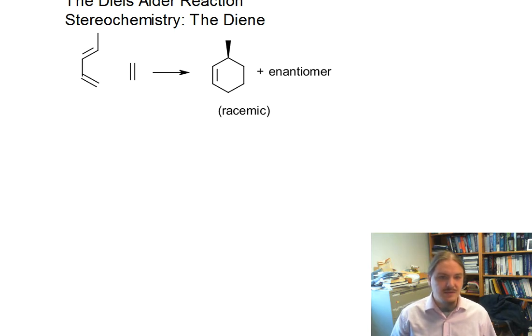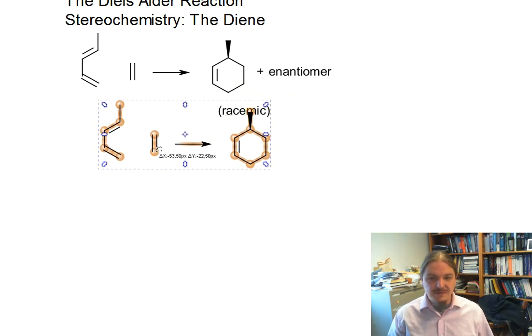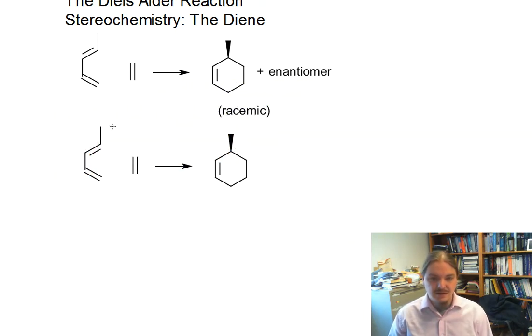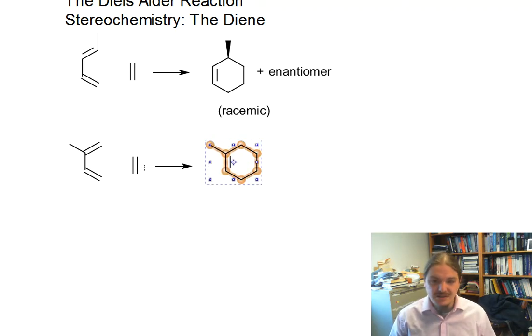I just wanted to take a brief moment and share that what is different if our alkyl group is on one of the middle carbons of the diene, then it ends up still attached to one of the alkenes.